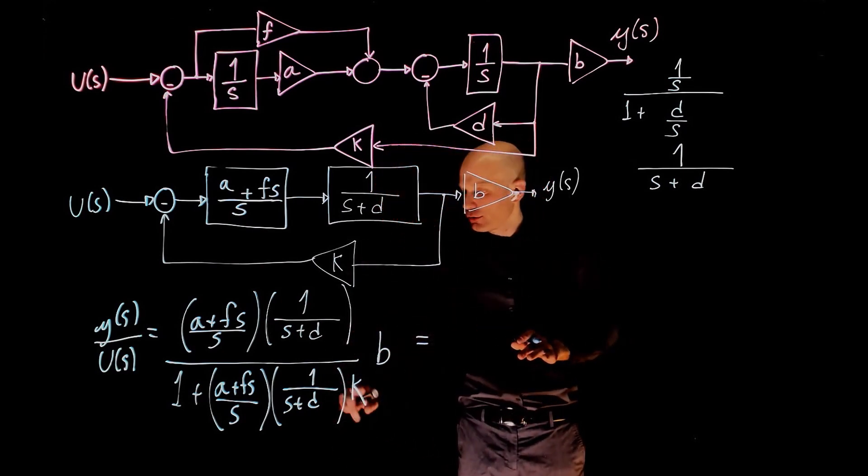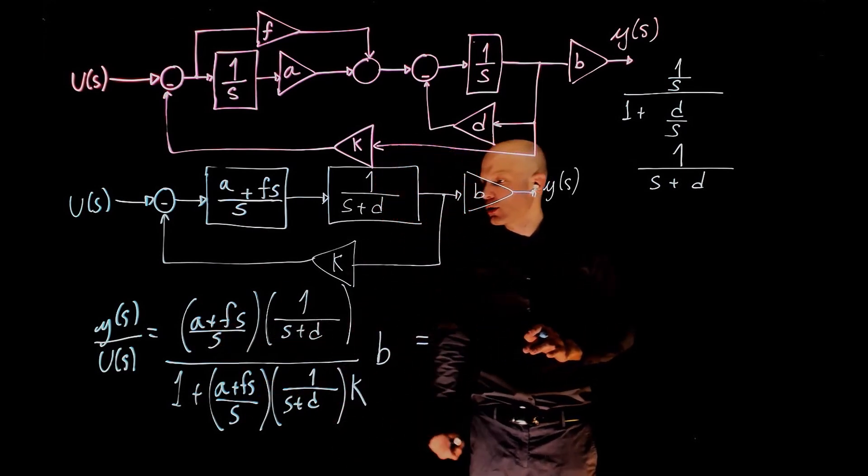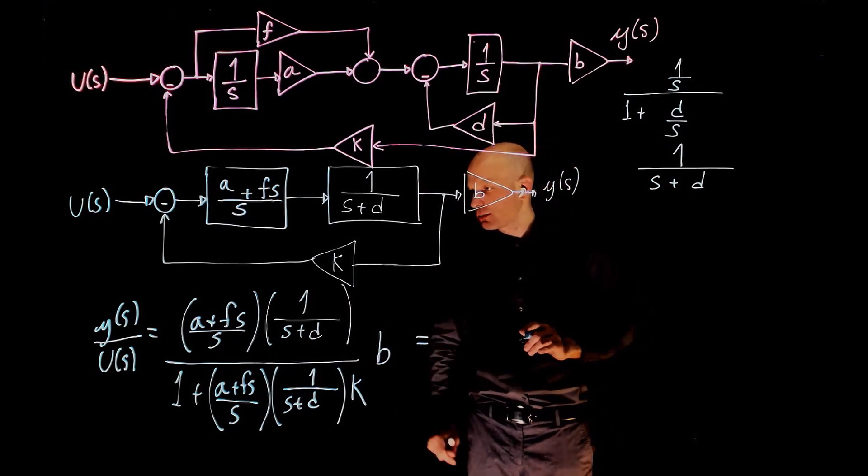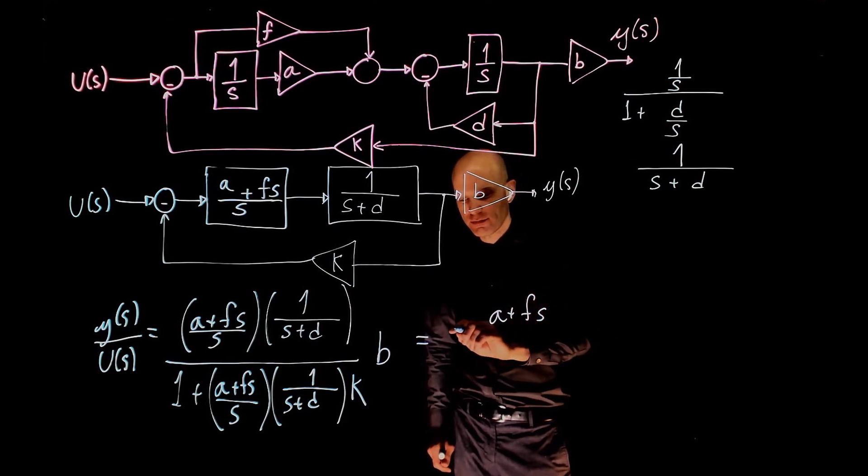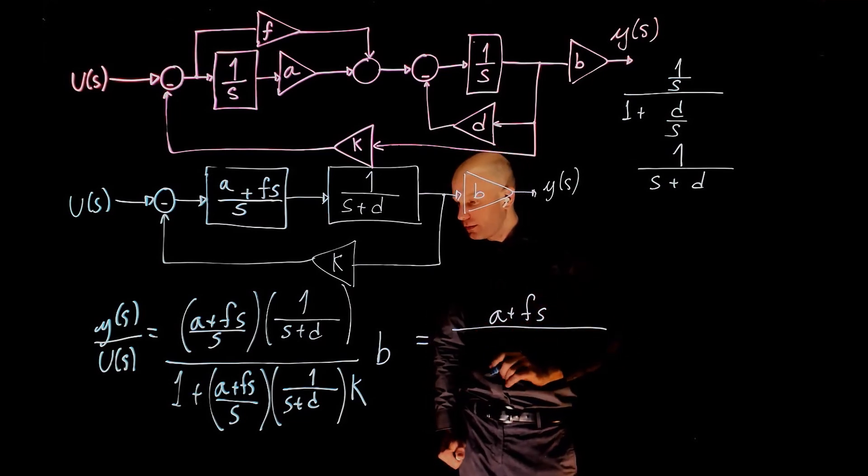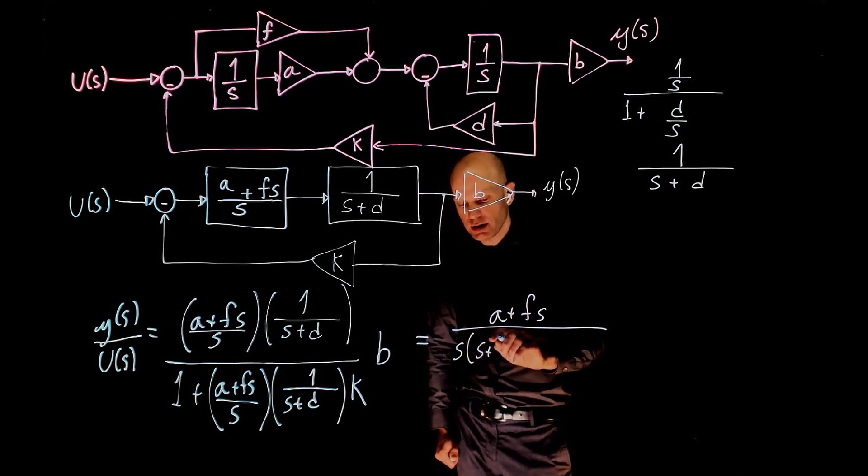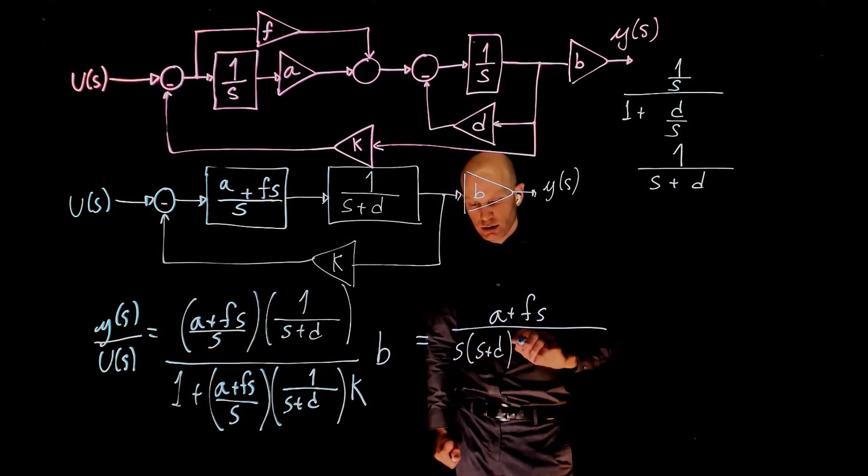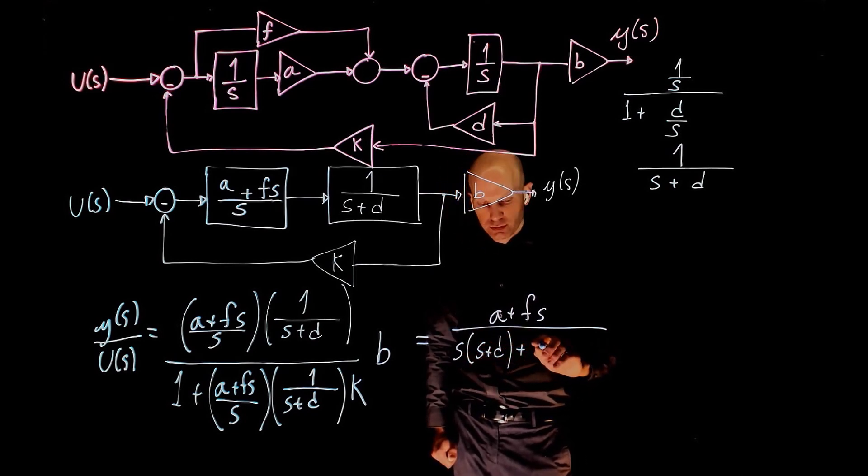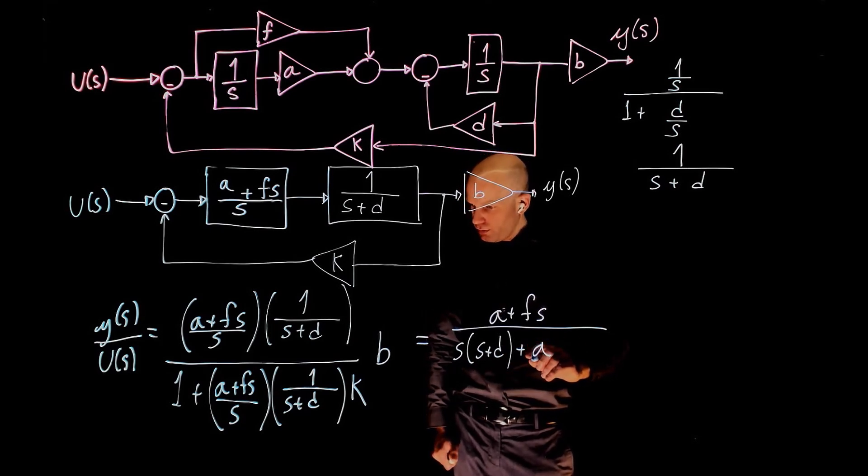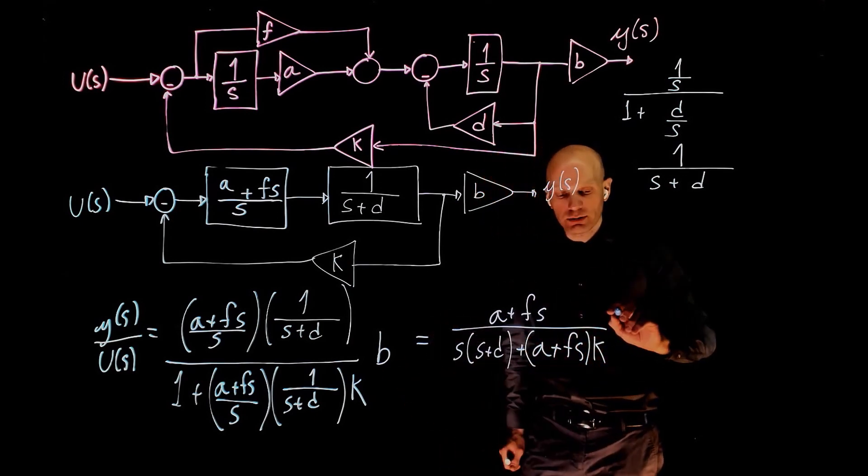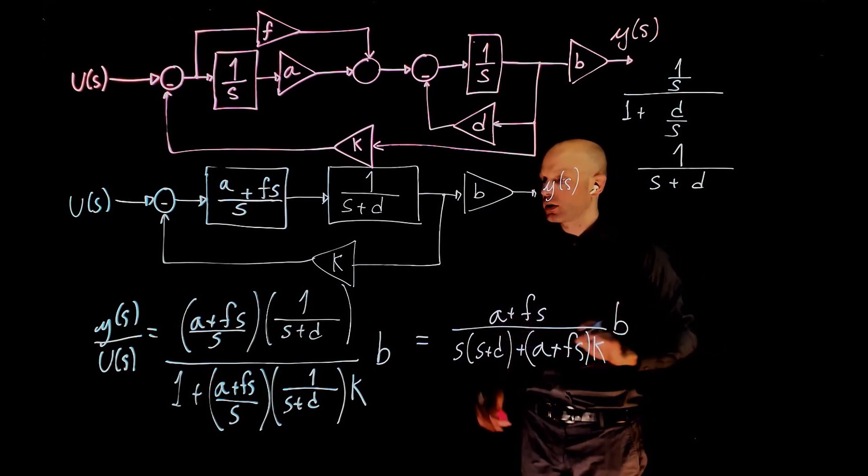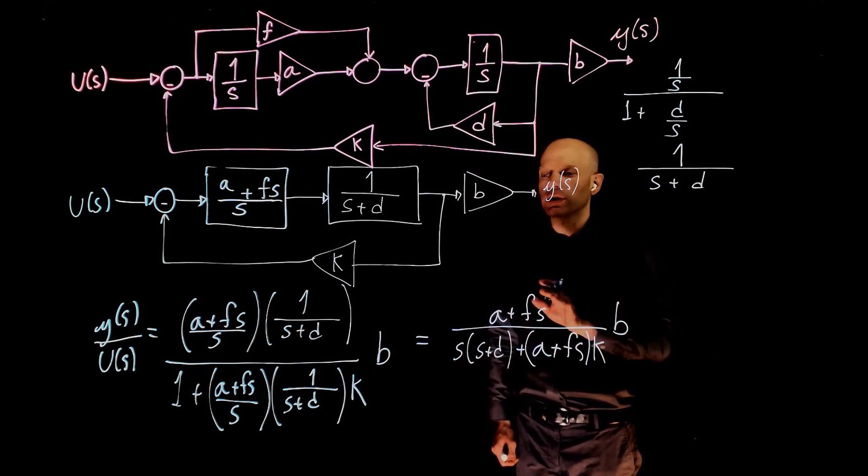If you now find the common denominator for the denominator and the numerator of this equation, everything will simplify. And this becomes a plus sf divided by s times s plus d plus a plus fs times k, everything multiplied by b. And this is the transfer function between the input and the output.